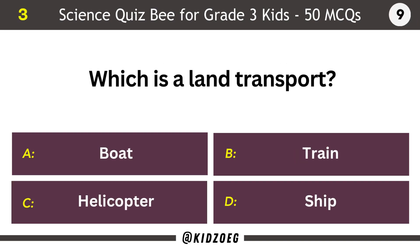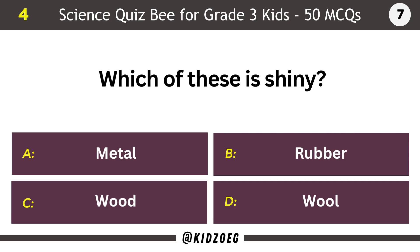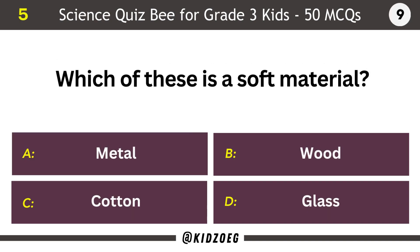Which is a land transport? Train. Which of these is shiny? Metal. Which of these is a soft material? Cotton.